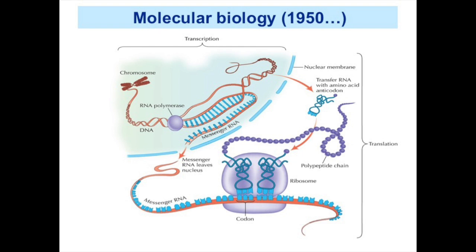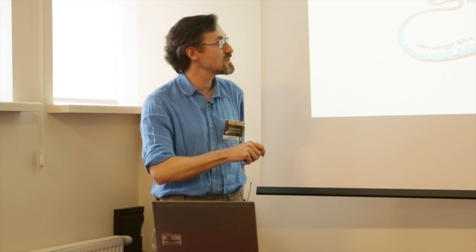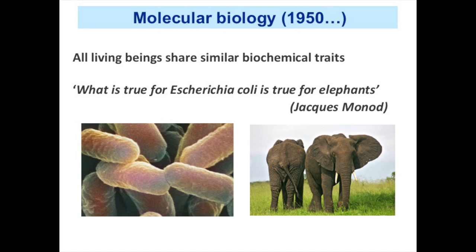In the second half of the 20th century, molecular biology and biochemistry began to discover many characteristics shared by all living beings. One example is the synthesis of proteins, carried out by very complex macromolecular assemblages called ribosomes, which decode information in messenger RNAs to synthesize polypeptides. Jacques Monod expressed this eloquently by saying that what is true for Escherichia coli is true for elephants.